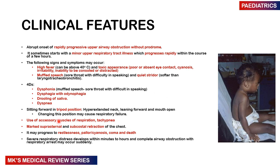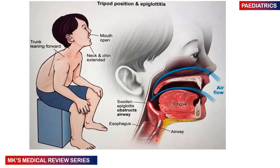Other clinical features include use of accessory muscles of respiration, tachypnea, marked suprasternal as well as subcostal recessions of the chest. This may progress to restlessness, pallor and cyanosis, coma, and eventually death. Severe respiratory distress develops within minutes to hours, and complete airway obstruction with respiratory arrest may occur suddenly — which is why it is very important to secure the airway in patients with acute epiglottitis.